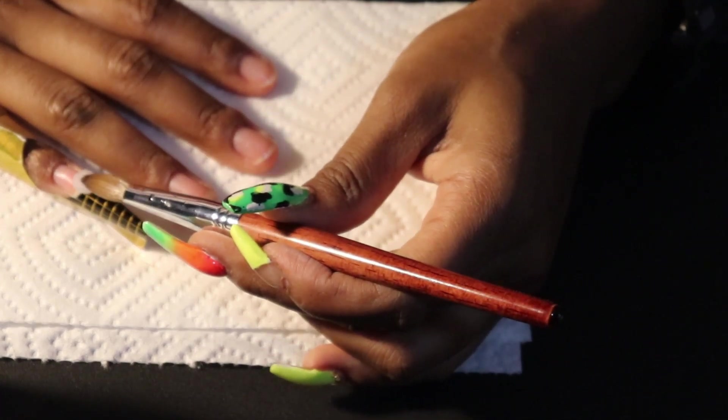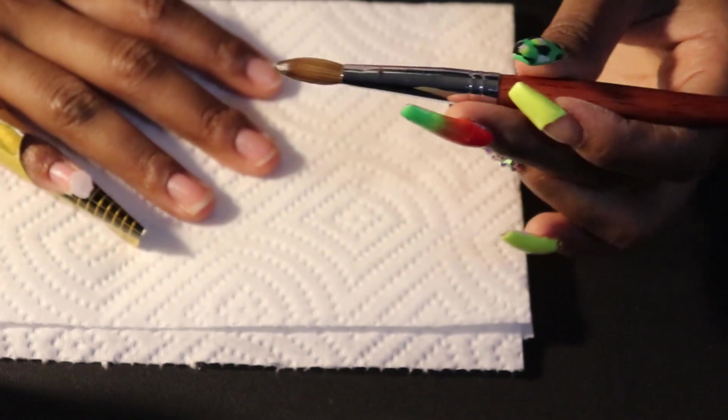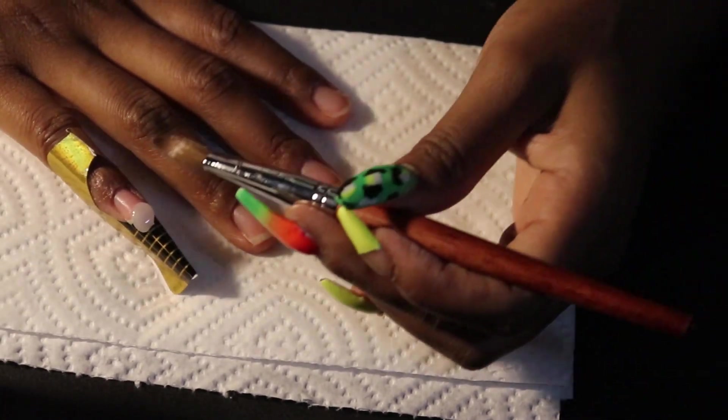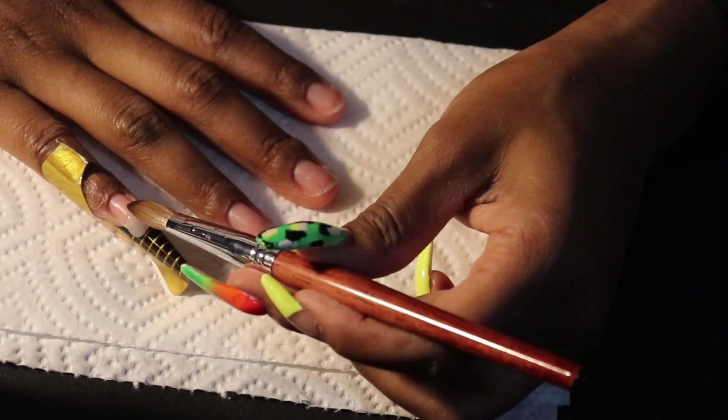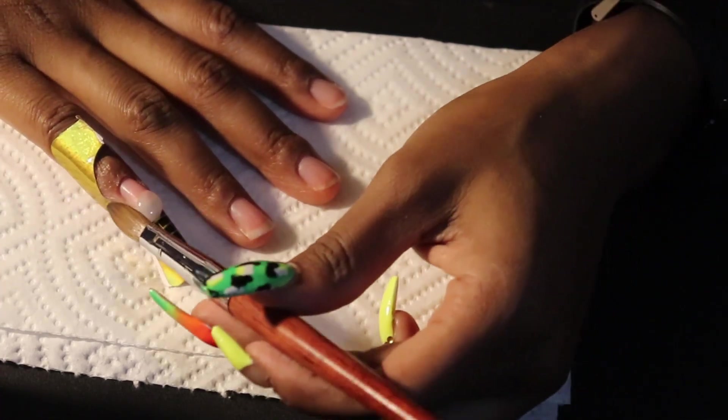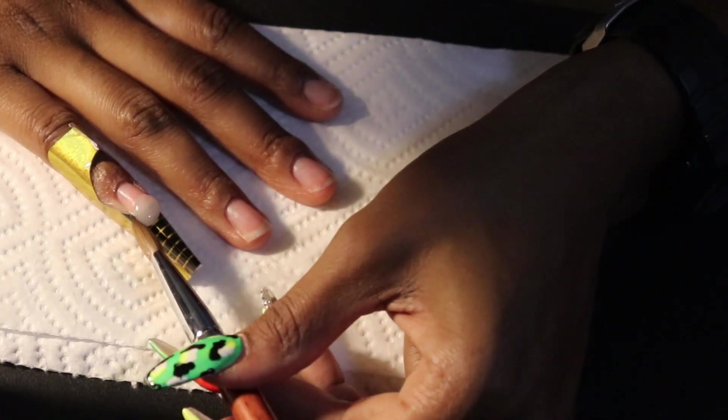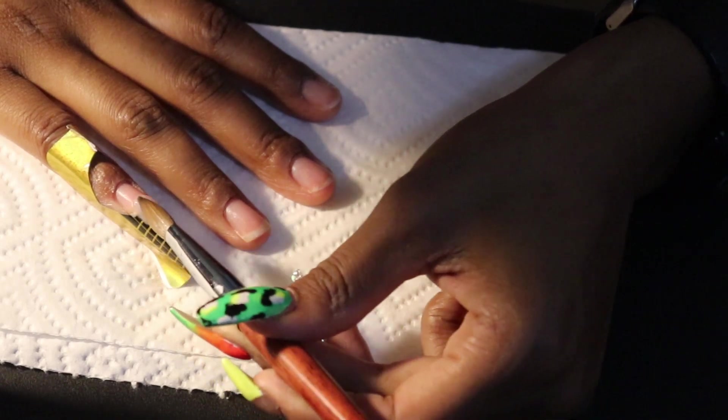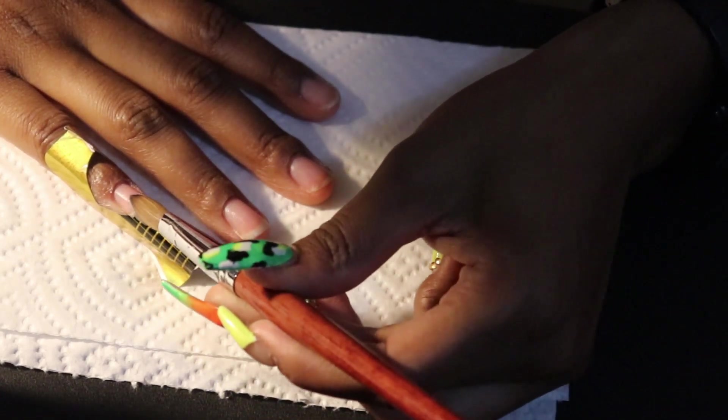Here I've got my first bead of acrylic. Please make sure that you watch the ratio of monomer to powder so that you're not getting a bead that's too runny or too dry, and that it's just right. Constantly use the paper towel to wipe off.